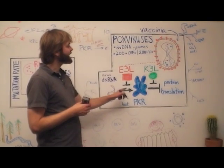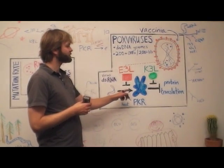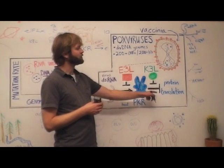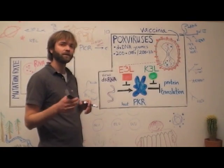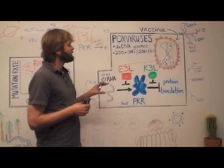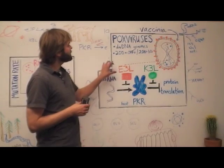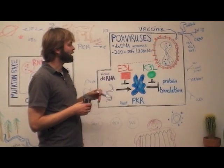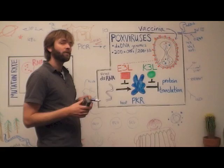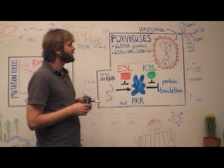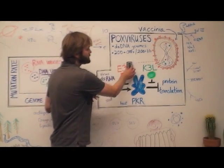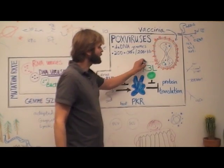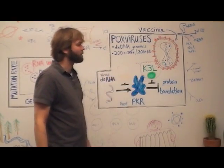On infection, PKR is activated to phosphorylate its substrate, which leads to a robust block in protein translation and shuts down the cell as a virus factory. Vaccinia encodes E3L and K3L that each specifically inhibit PKR in different ways. In order to test how the virus might adapt, we used a strain where E3L had been deleted, which put strong selective pressure on K3L to defeat PKR.